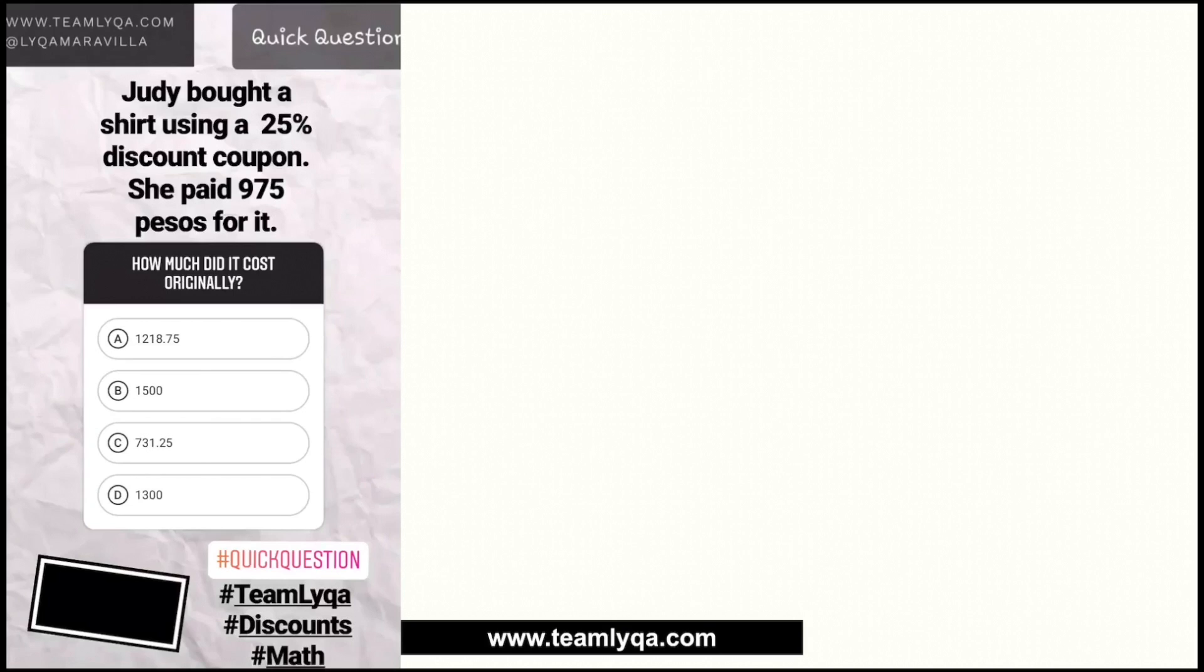Now, most of you actually answered letter A. Now this is actually wrong. This is very, very wrong. And if you want to fight me in the comments, you're free to do so. I will just keep proving to you that this is wrong. Now, why is this wrong? A lot of people, what they do is basically 975. Then they take 25% of this. And then, whatever that is, they just add it to the 975 which is the discounted price. Now, if you do this, you will get to 1,218.75.